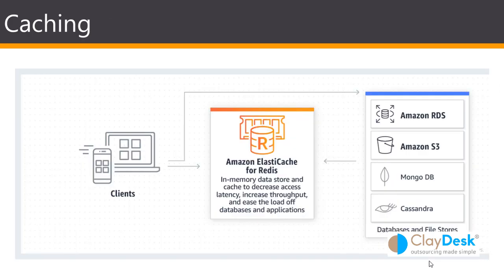For Redis use cases, one is caching. Redis is a great choice for implementing highly available, distributed, and secure in-memory caches. It allows you to decrease access latency, increase throughput, and ease the load off your database. It can serve frequently requested items at sub-millisecond response times and enables you to easily scale for higher loads without growing the costlier backend databases.